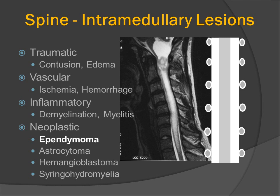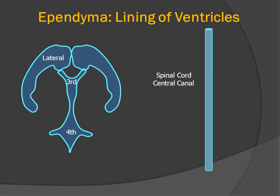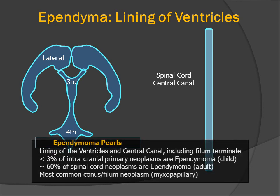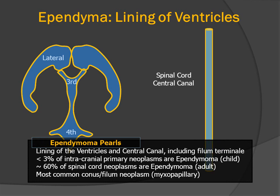The most common neoplasms of the spinal cord are intrinsic glial tumors, especially the ependymoma. They will typically cause expansion of the spinal cord within the subarachnoid space, which can be seen on MRI, CT, and in older days on myelography. The cell of origin for the ependymoma is the ependymal epithelial cell, which forms the lining of the lateral ventricle and the lining of the central canal of the spinal cord, extending all the way down through the filum terminale in the area called the cauda equina.